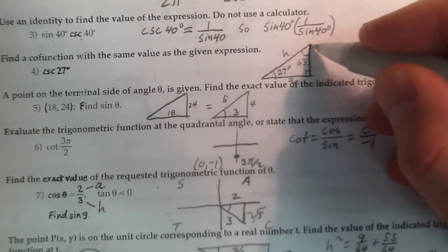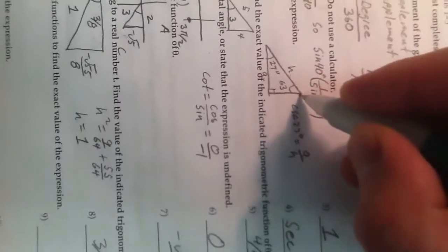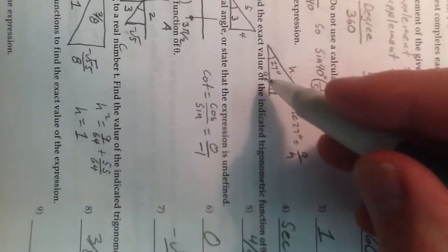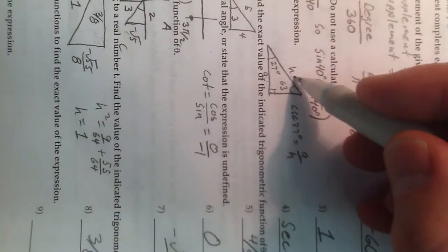Now what if I come over to this complement corner right here? What function gives me the adjacent over the hypotenuse?